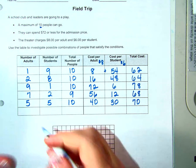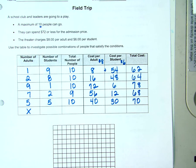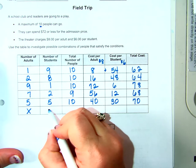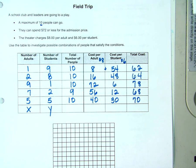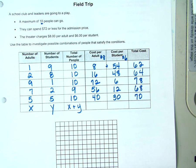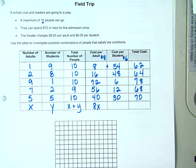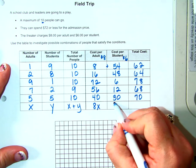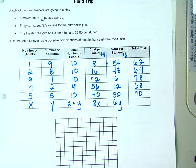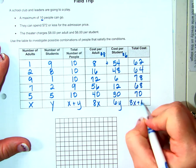What do you think my next question is? How many adults are going? X. How many students are going? Y. How many total people are going? X plus Y. How much does it cost for an adult? Eight dollars. And how many adults are going? X. So 8X. What's the cost for a student? Six Y. So what's the total cost? Eight X plus six Y.